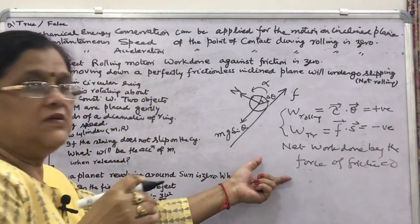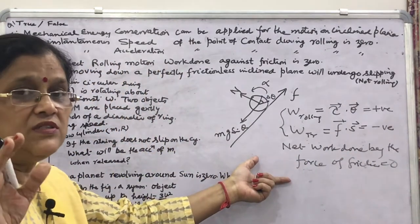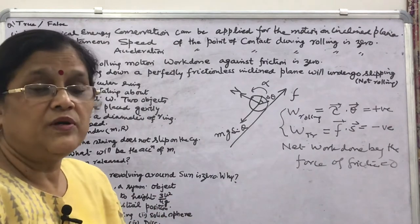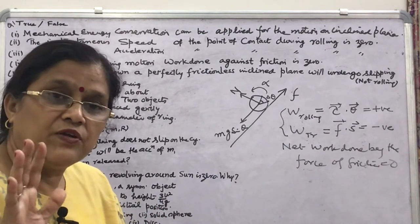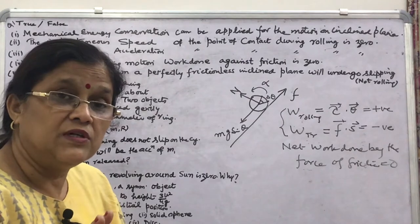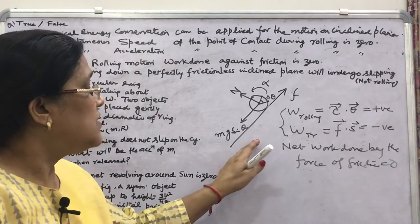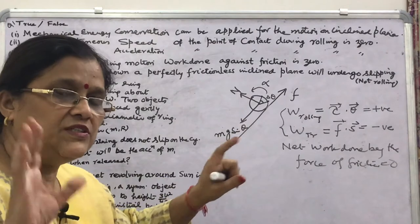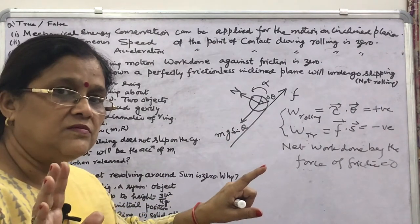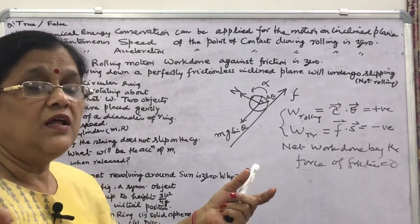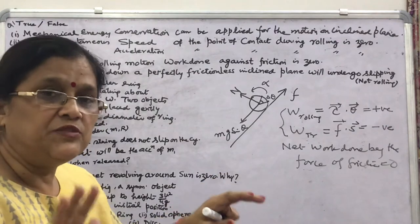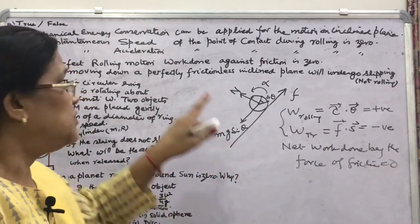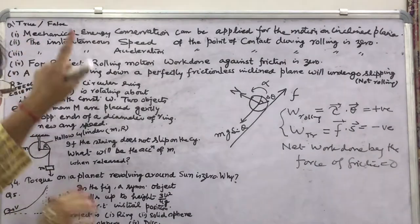Why have I explained this? Because it is asked that mechanical energy is applicable to conservative forces, and friction is a non-conservative force. Here, work done by the frictional force is zero, so mechanical energy conservation is applicable to rolling motion on an inclined plane. This first part is TRUE.